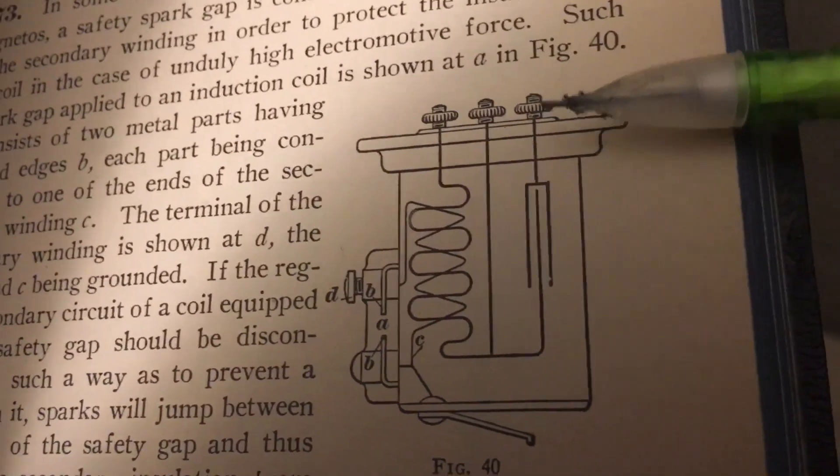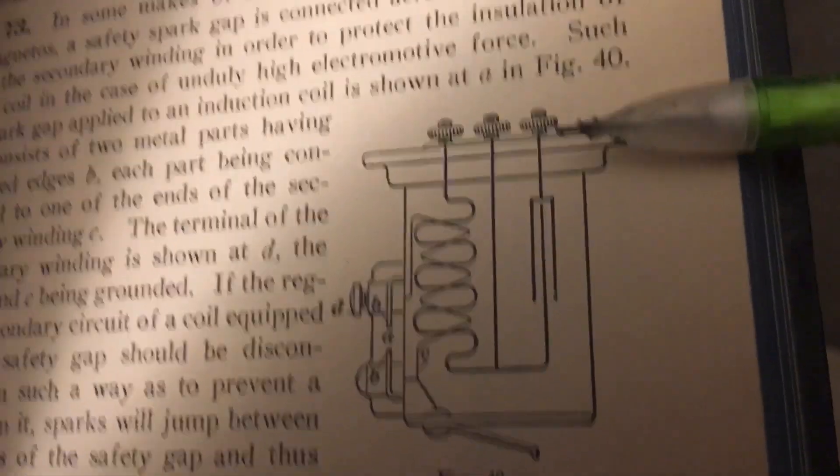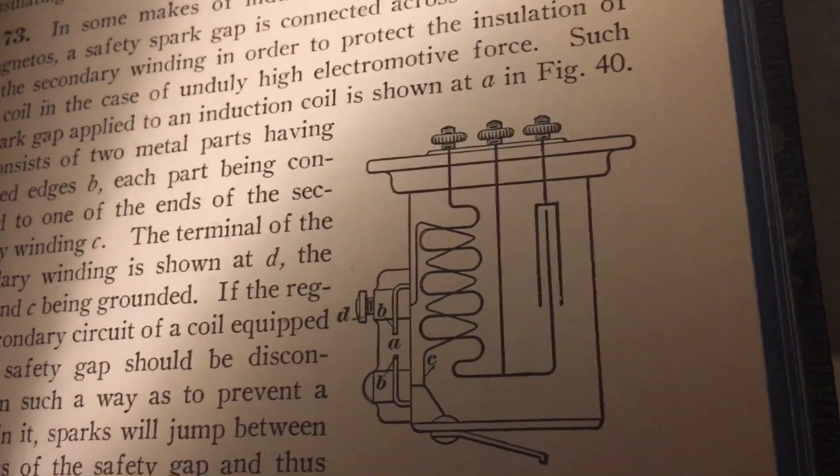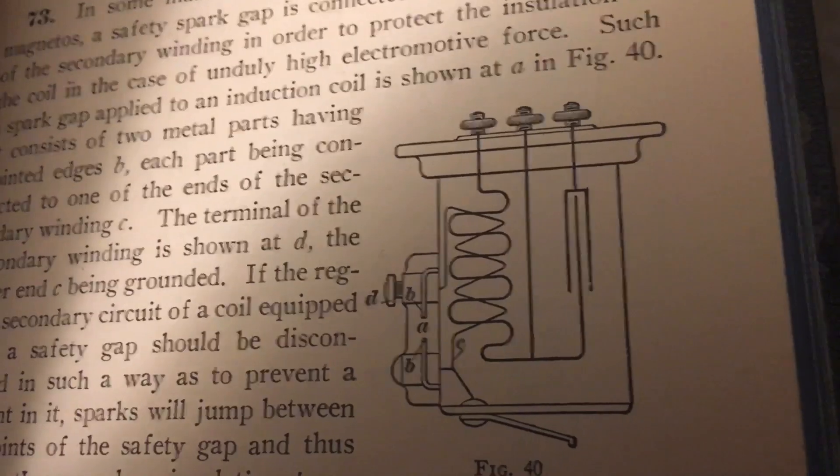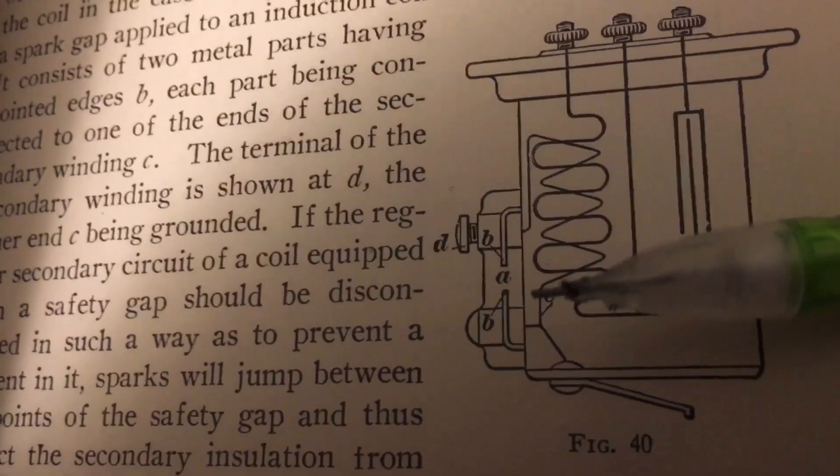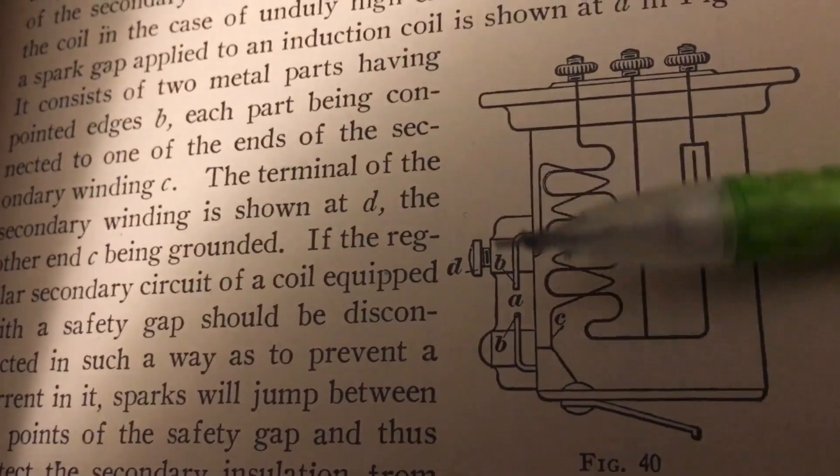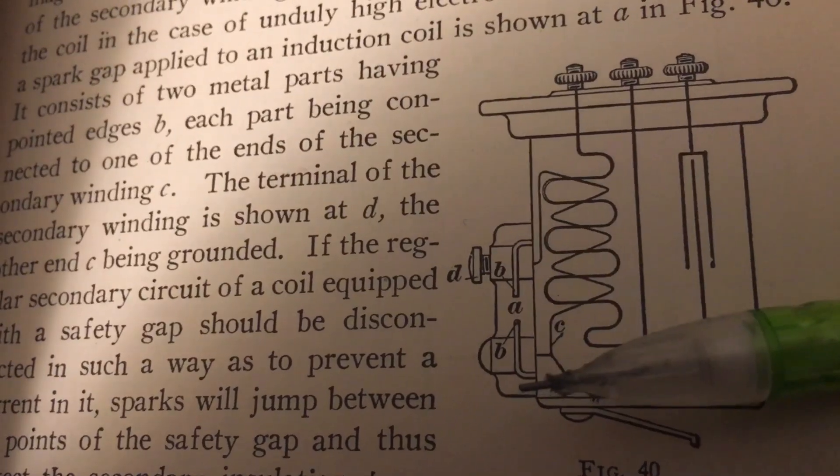These two contacts would go off to the points. Proper condenser is shown within the housing of the coil assembly itself. What caught my interest was this here on the side of the coil - they have what's called a safety gap.